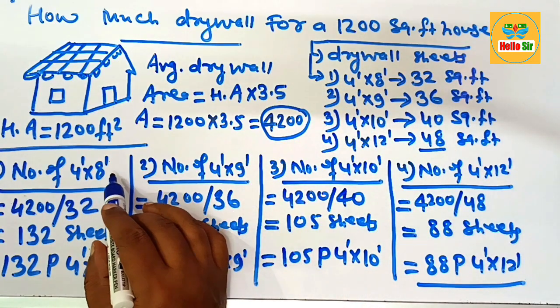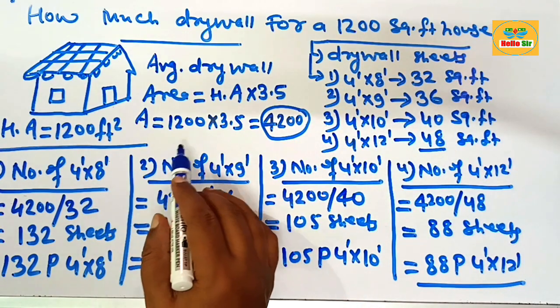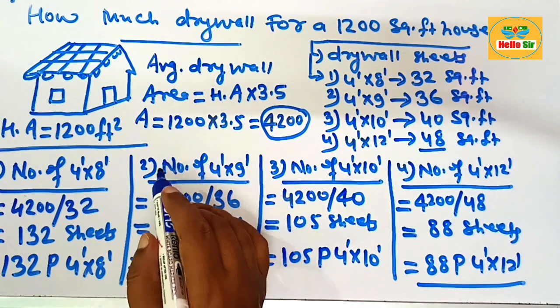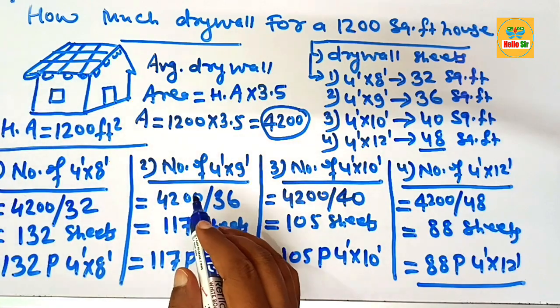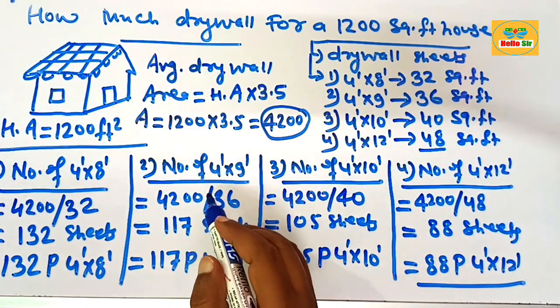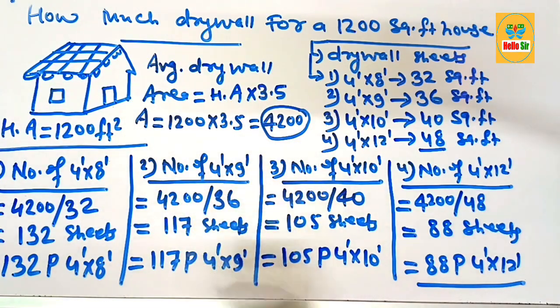You have many options to select from, and this is the thumb rule to decide the drywall required for a 1200 square foot house. Thank you.